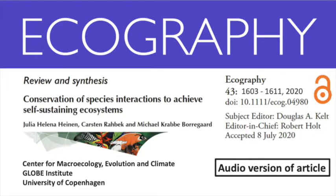We will refer here specifically to interactions between particular species that are obligate for at least one of them. These are not the only interactions of relevance for species conservation, but we focus on these as they are essential for reaching the goal of self-sustaining populations. They also have received relatively little attention in conservation literature. This is distinct from the broader community interaction framework focusing on ecosystem function, food webs and nutrient structure, that is deservedly receiving increasing attention in conservation science.